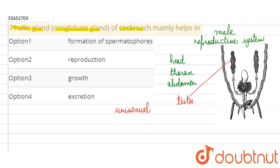These are paired structures located between the fourth and sixth abdominal segments, placed laterally in its body. The tubes are called vas deferens. The sperm from the testes are carried by the vas deferens.